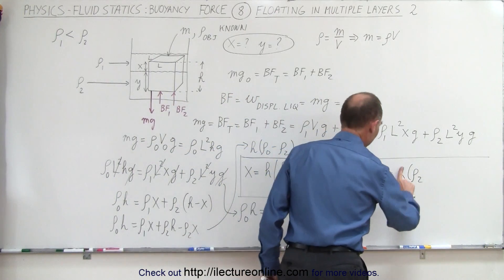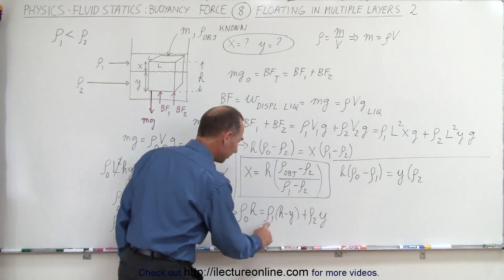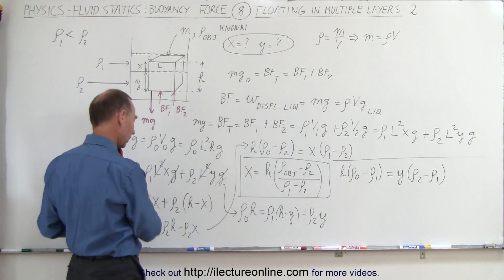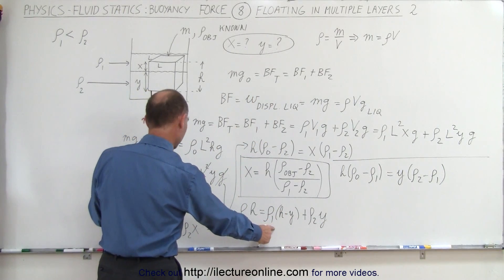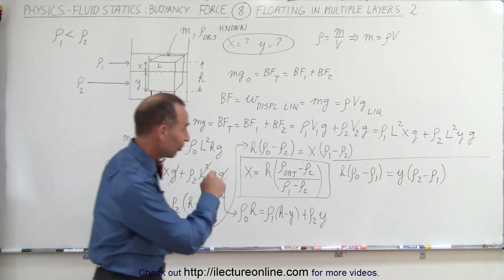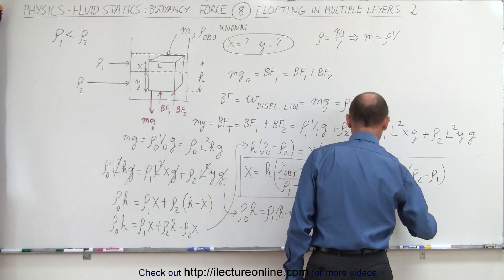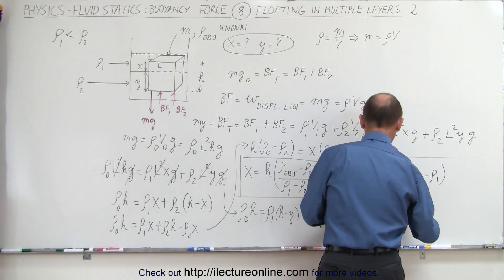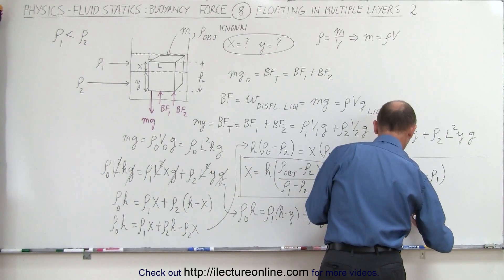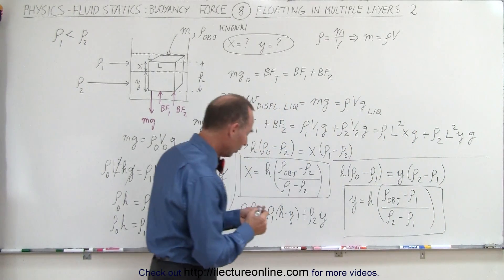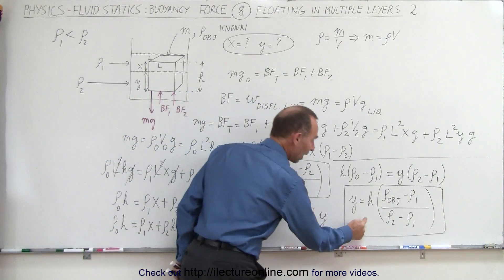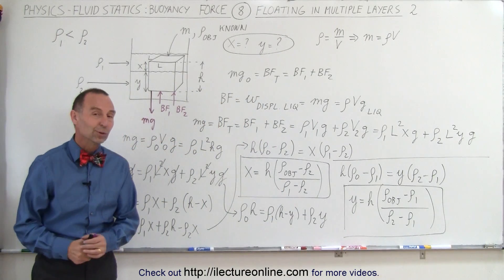Factoring out y: h times (density of object minus density 1) equals y times (density 2 minus density 1). Solving for y, we get: y equals h times (density of the object minus density 1) divided by (density 2 minus density 1). Notice those are the two equations we need to find the portion of the object inside layer 1 and the portion inside layer 2. That's how it's done.